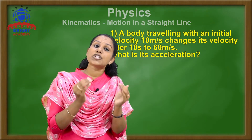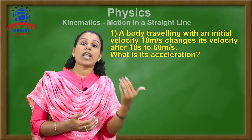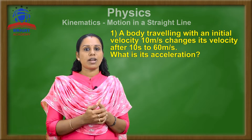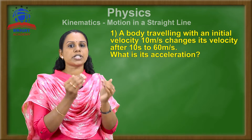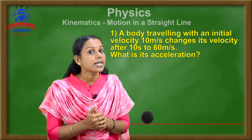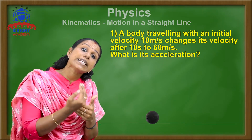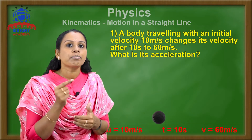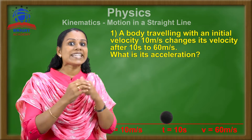A body traveling with an initial velocity of 10 meter per second changes its velocity after 10 seconds to 60 meter per second. What is its acceleration? So the object travels with an initial velocity of 10 meter per second, and after 10 seconds, its velocity is 60 meter per second.